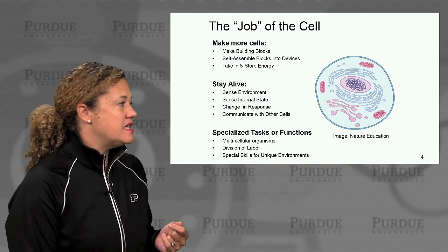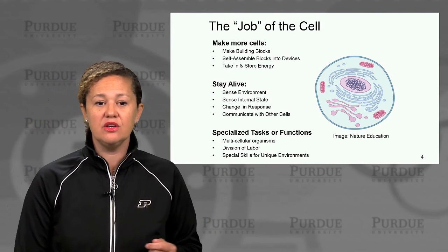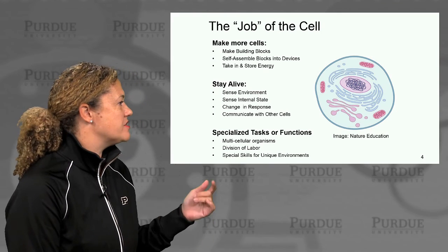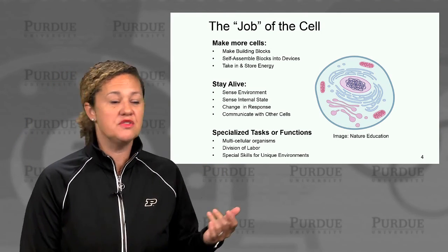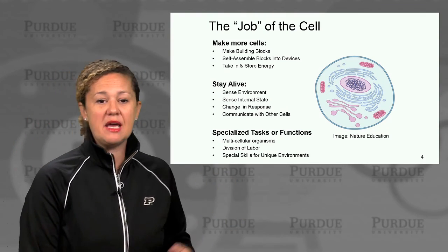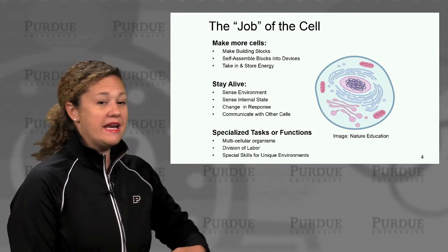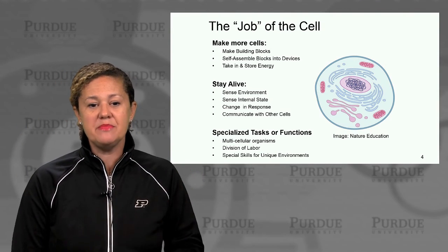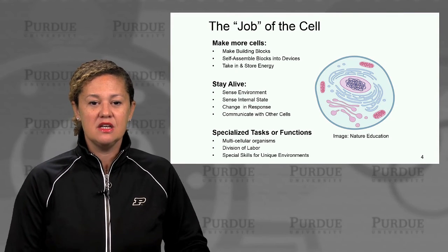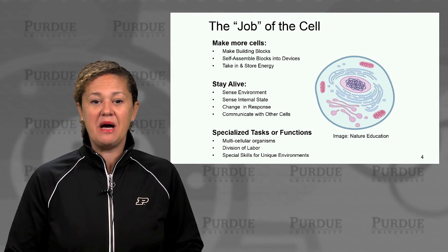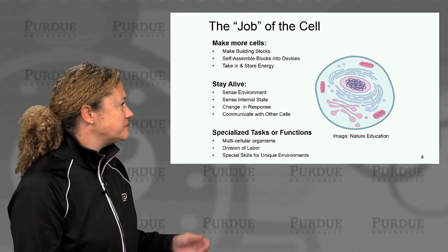There are many cells that take on specialized tasks, particularly in multicellular organisms, where there's division of labor and cells develop specialized skills for unique environments. An example may be a neuron in your brain, or a pancreatic beta cell, whose big job it is to sense glucose and make insulin in response to benefit the rest of the body in the multicellular organism — you, in this case.